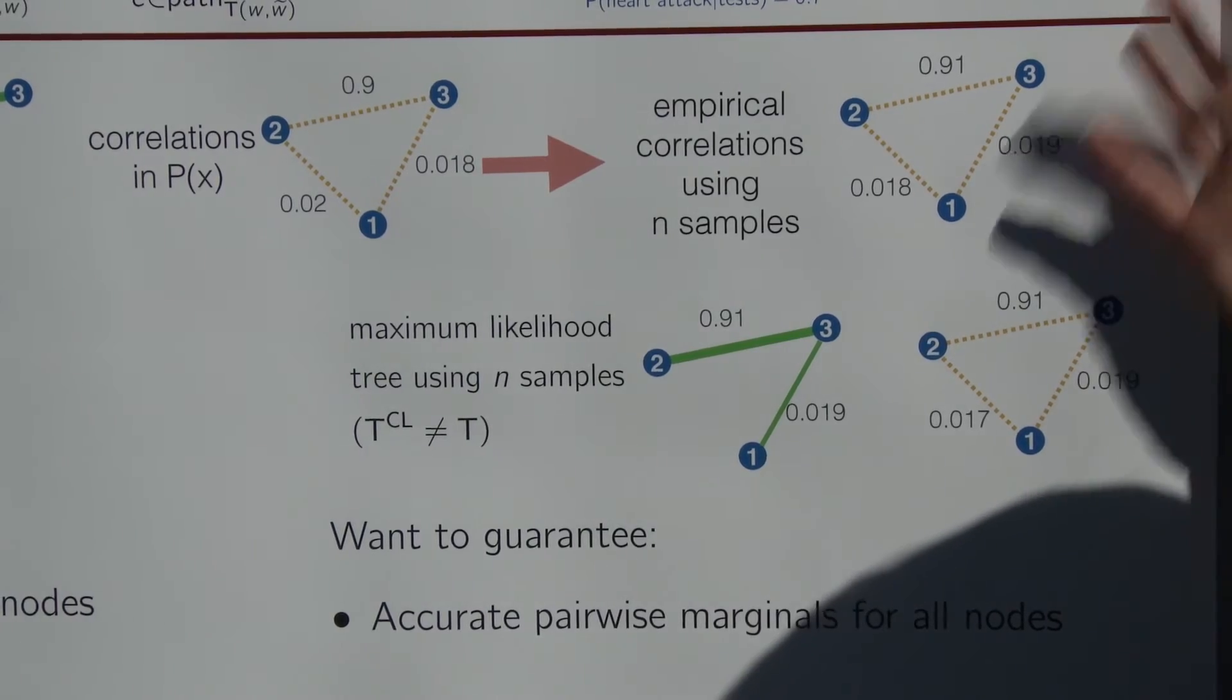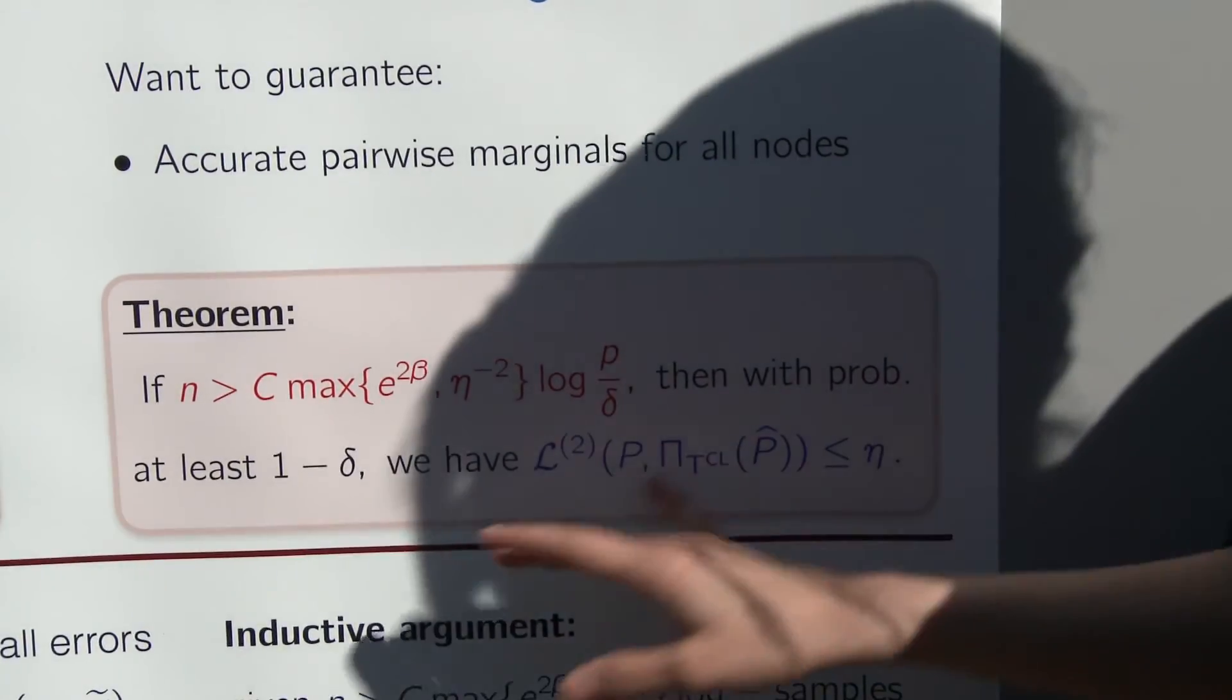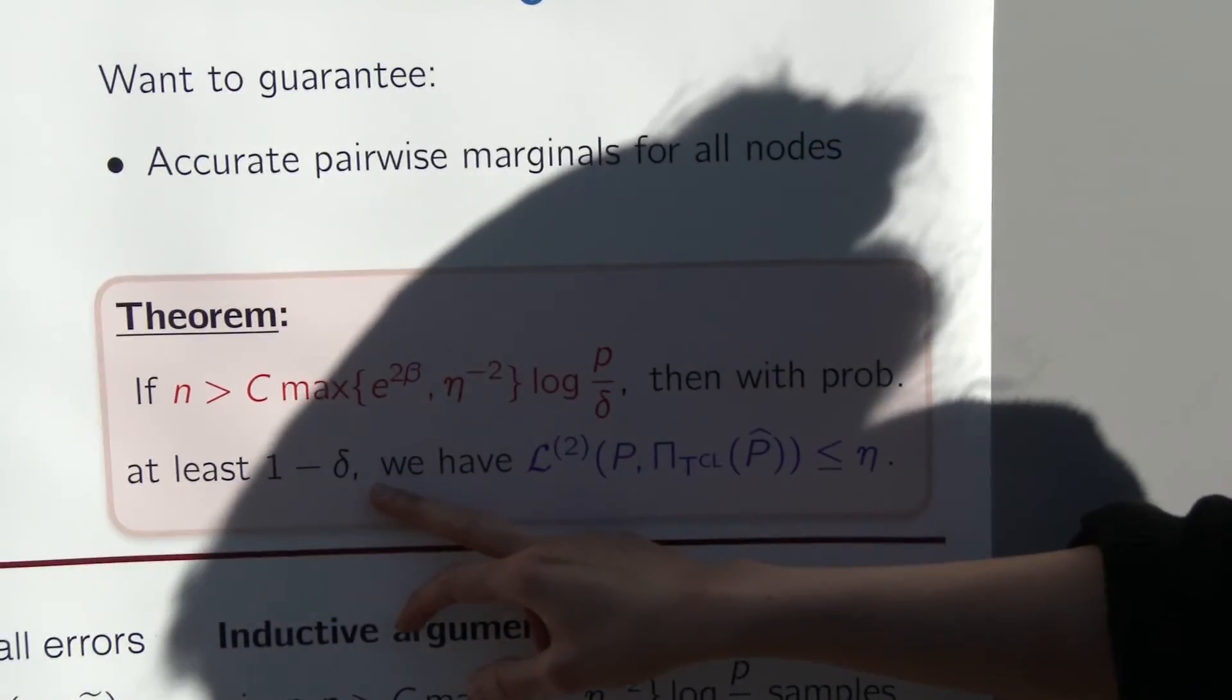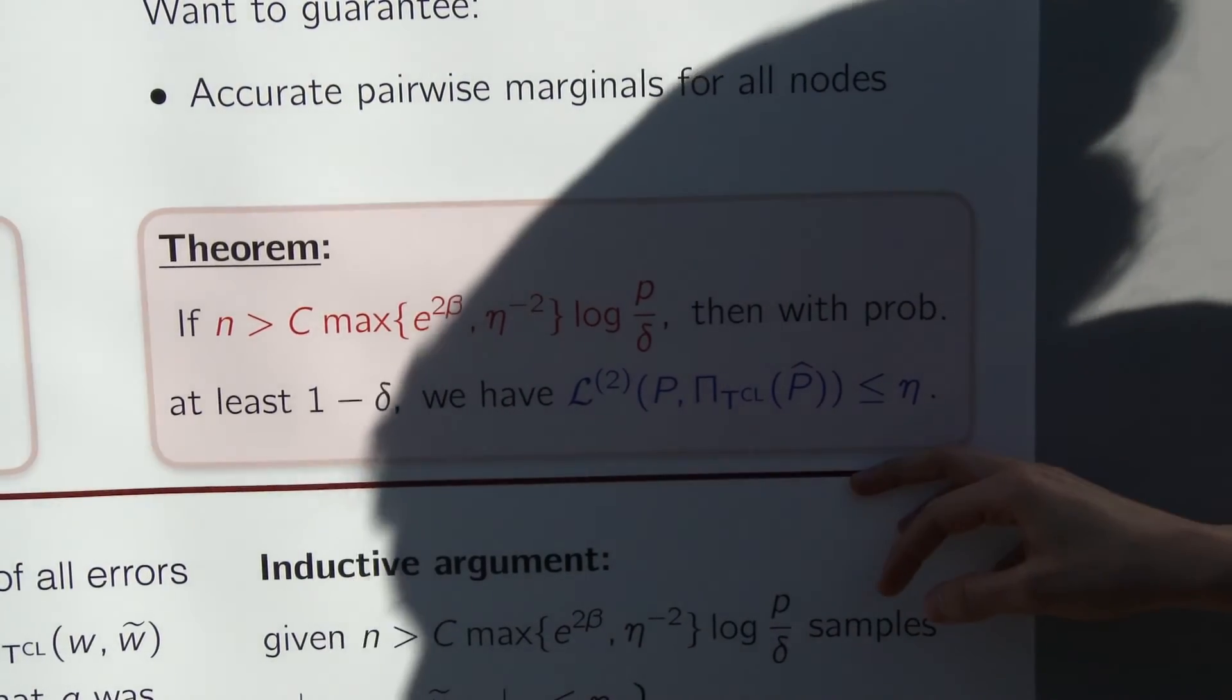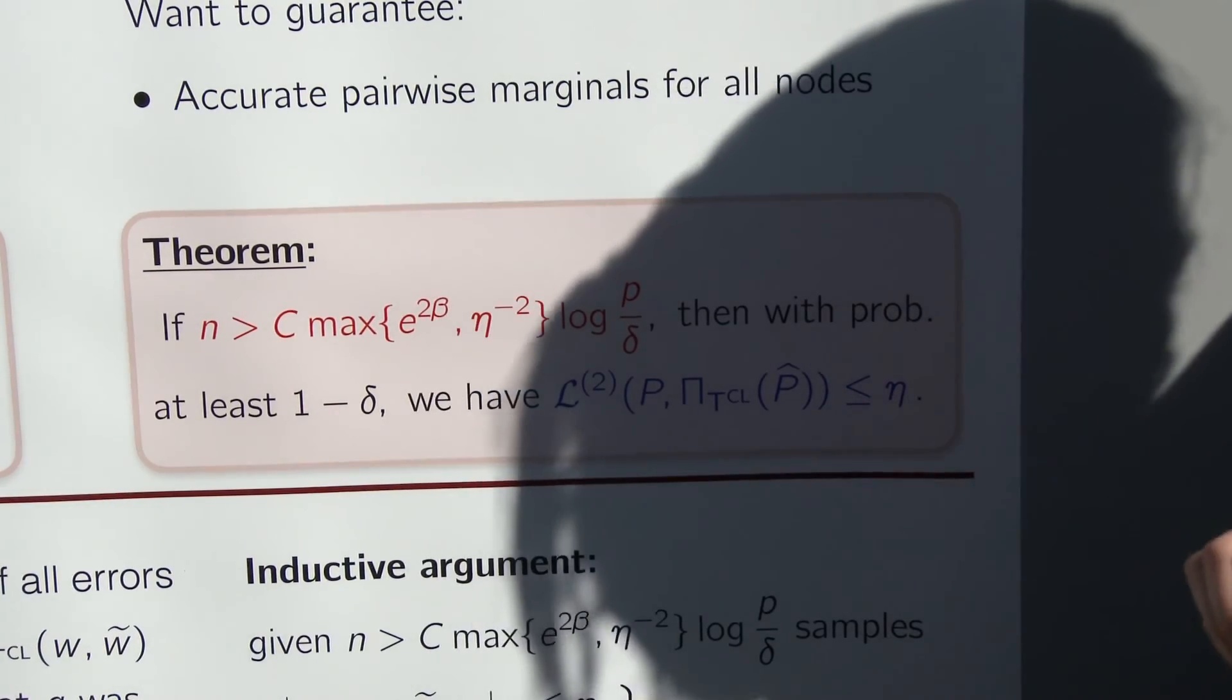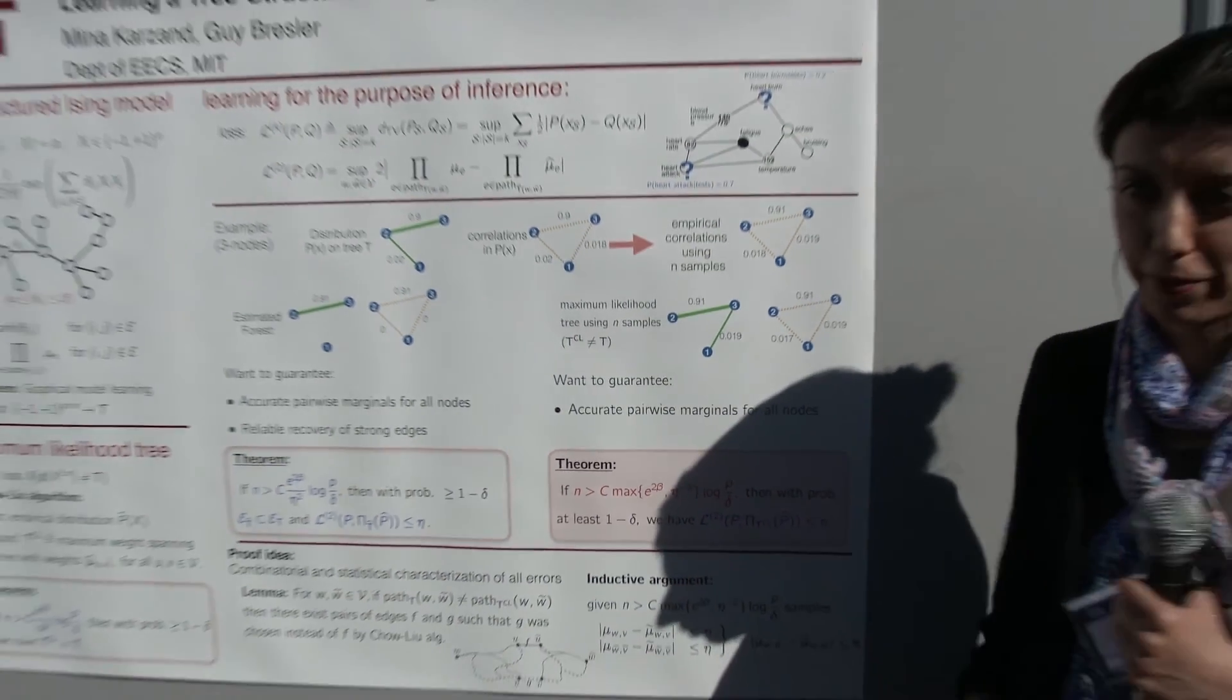Actually, we looked at the tree recovered by the Chalu algorithm, and we gave an achievability result. It shows that if number of samples is greater than maximum of e to the power of two beta and eta to the power of minus two, then I'm recovering the pairwise marginals accurately with high probability. The proof needs a combinatorial and a statistical characterization of all the errors that you can see in the paper.